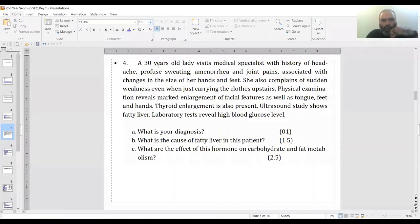We look at a 30-year-old lady who comes with a history of headache, profuse sweating, amenorrhea, and joint pains. And this is the main feature: associated with changes in size of hands and feet. She also complains of sudden weakness when carrying something upstairs. Going upstairs is also an issue.